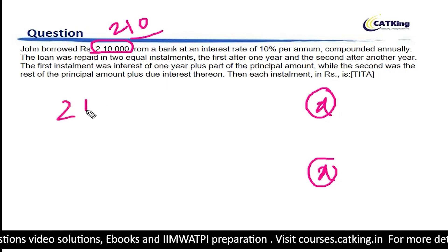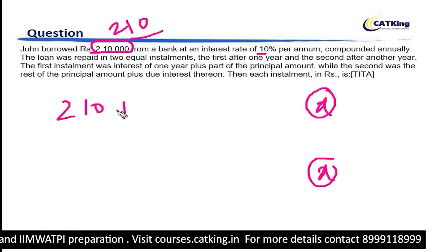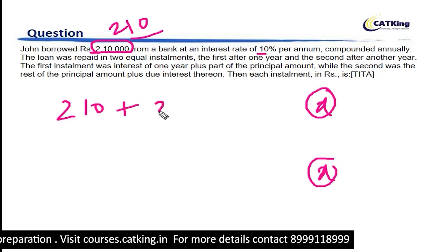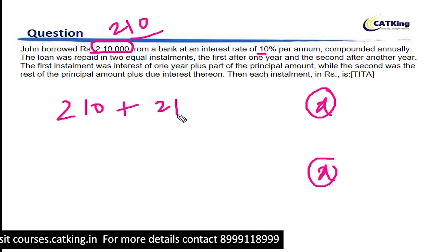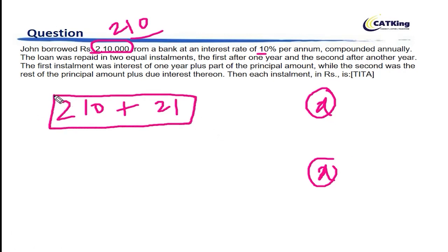So, first year, 210 is the amount. 10% interest is 21. First installment is X rupees. So, this is the first year principal plus interest.